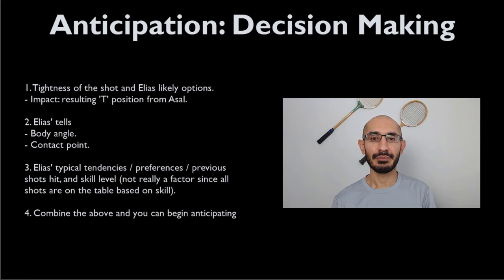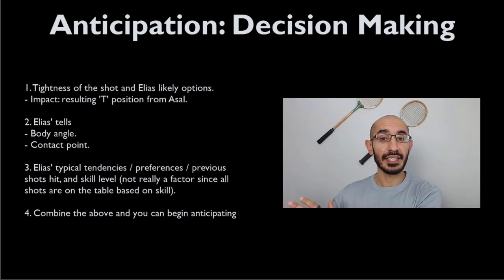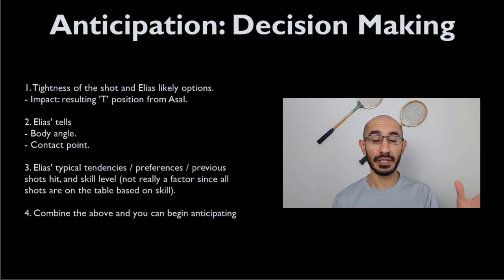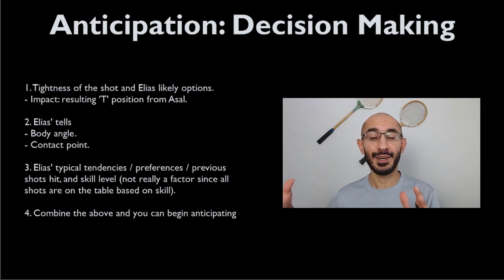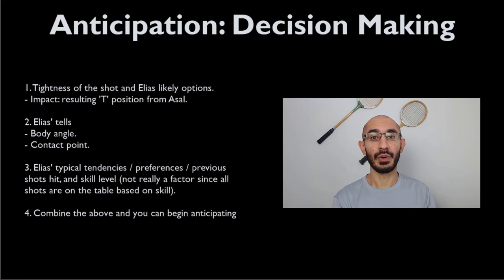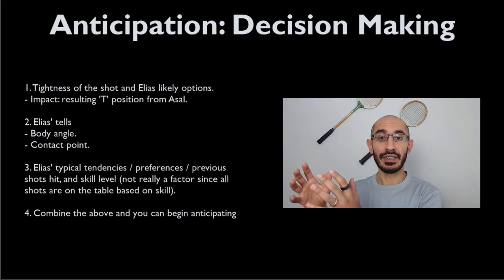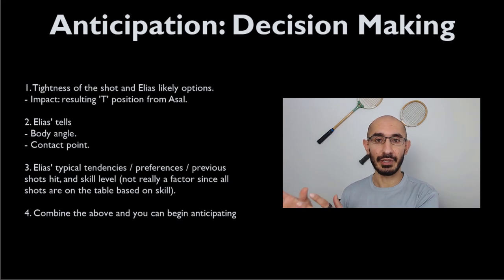There's this theory of chunking that's been tested with chess masters, where they took grandmasters and created multiple chess scenarios on different boards. Some were completely random, others were common chess scenarios. The grandmasters were able to recall the common chess scenarios with ease, whereas the totally random chess scenarios were the ones they had no idea how to recall.